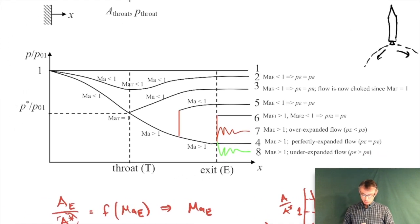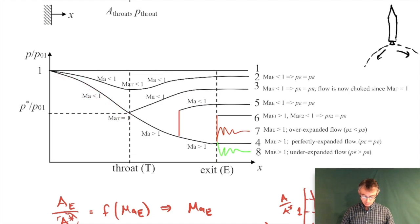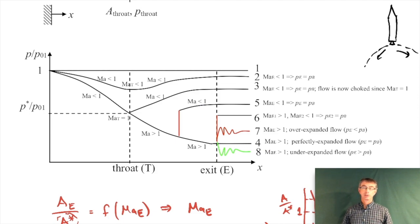To analyze cases seven and eight, everything inside the converging-diverging nozzle is isentropic — subsonic upstream of the throat, sonic at the throat, supersonic downstream of the throat. All the non-isentropic behavior happens outside the nozzle further downstream, and you're not responsible for that part in this course. Everything inside the converging-diverging nozzle is isentropic.